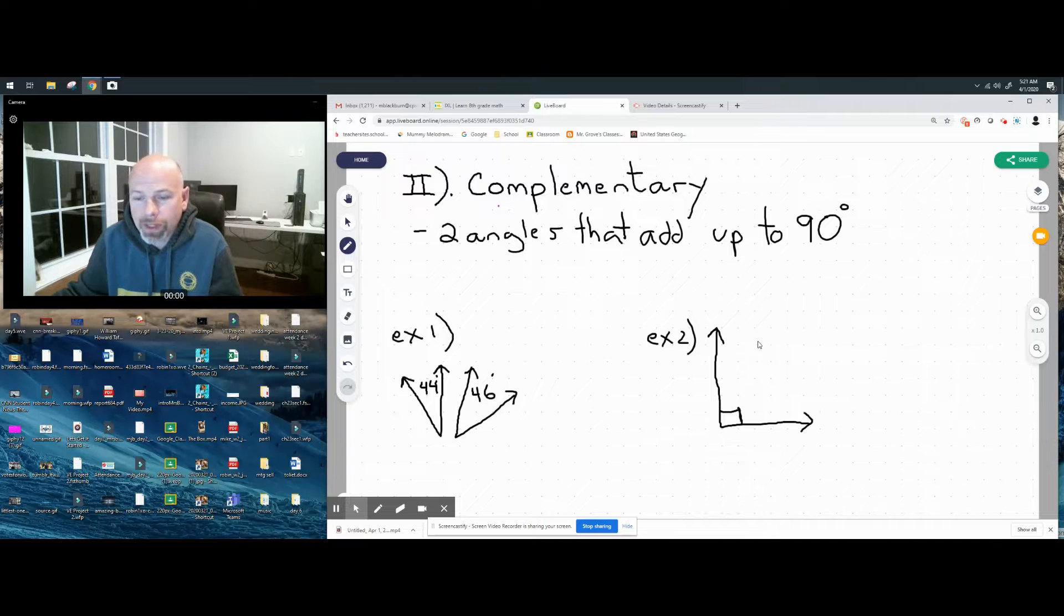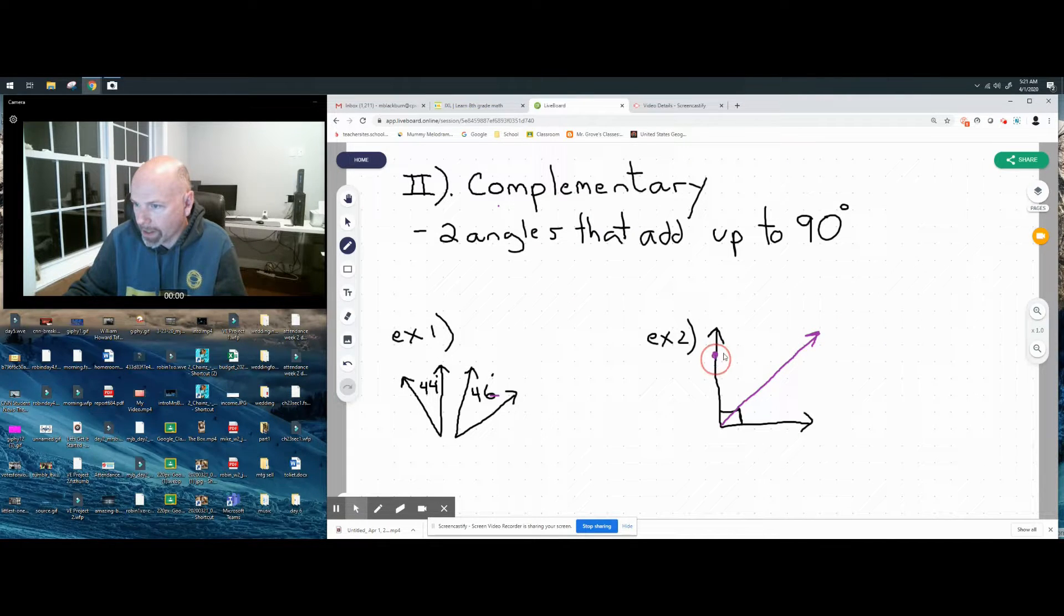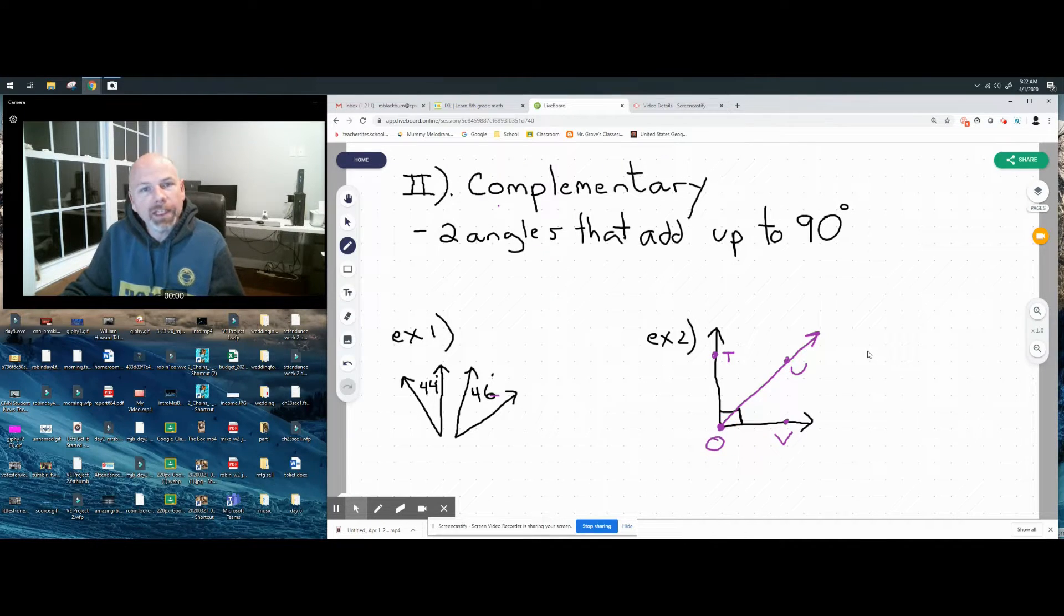Sometimes they don't use numbers. Sometimes they may use a diagram like in example two, but they may modify it. What if we insert another line in here, another ray, and let's put some letters on here: T, U, V. We'll call this O. They didn't even give us numbers. They did give us this 90-degree symbol box, so we know together this makes 90 based off that symbol.